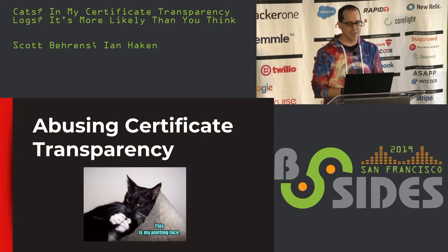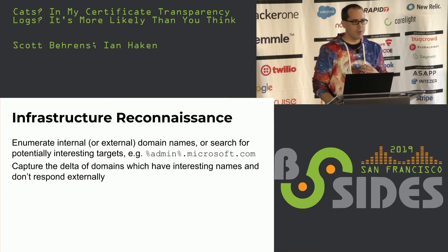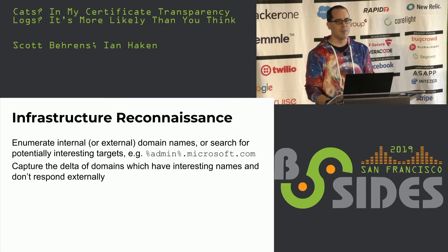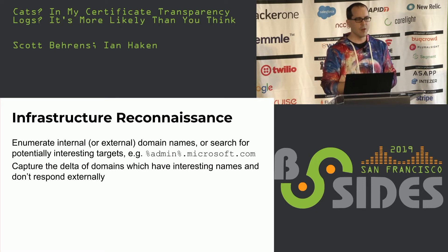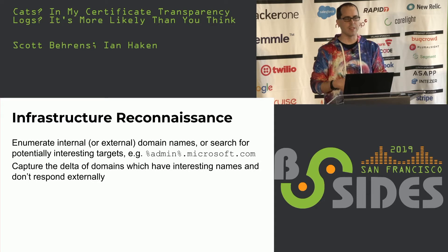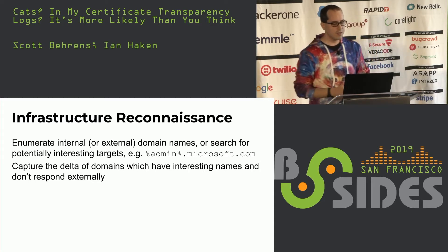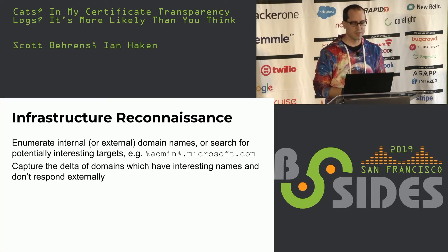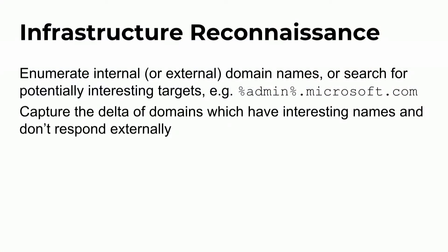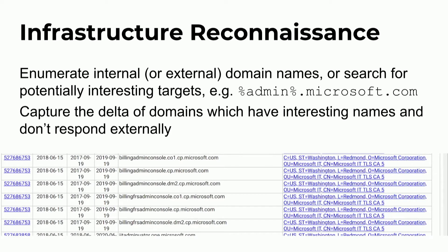After learning about this ecosystem, I sat down and thought about what I can do with this new toy. The first thing — and what we've heard people talk about a lot — is that CT logs provide a way for attackers or pen testers to do infrastructure reconnaissance. Anytime a certificate is created for some kind of web service, whether internal or external, it has to show up in these public logs. You can enumerate internal or external domains. You can search for admin.microsoft.com and see what shows up. I ran a search and found a bunch of billing admin consoles in the CT logs — they're there, and they're a matter of public record.